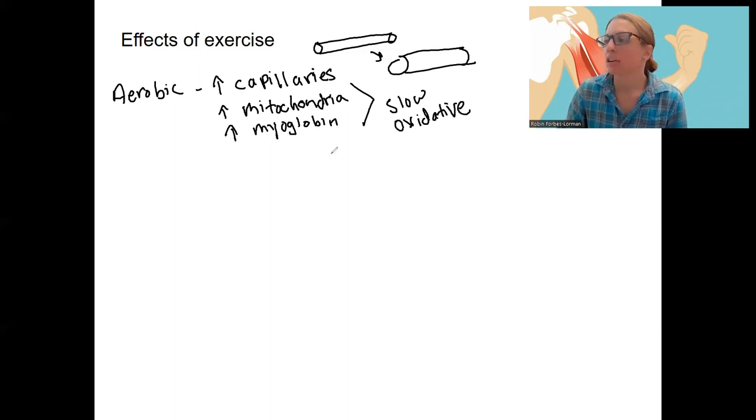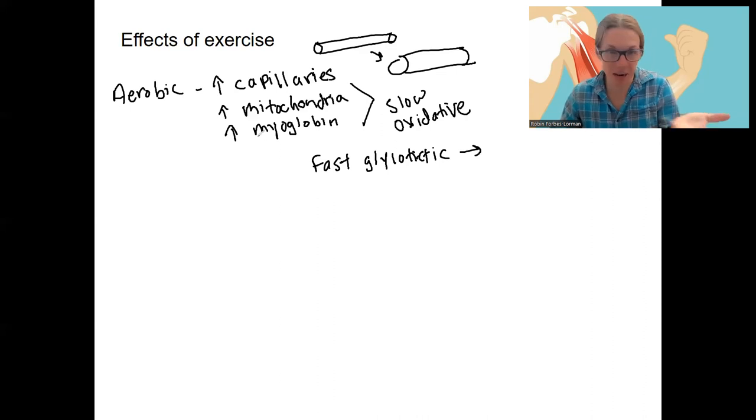But again, we also have conversion of fast glycolytic to first fast oxidative, and then really as they adapt more, they would become more and more slow adapted - oxidative and slower. So that would be aerobic training.